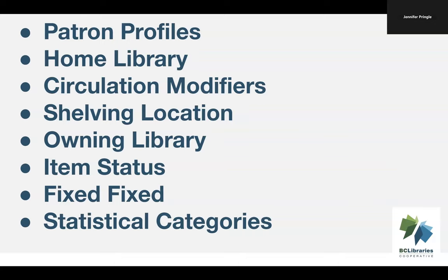Evergreen collects some very useful data often used when running statistics or figuring out what's going on with an item or patron. Patron profiles allow you to sort patrons into categories which vary based on libraries, and these profiles also affect how your items circulate. Home library allows you to track where a patron is entitled to library service — especially important for BC public libraries, as this data is used for annual surveys to track BC One Card use.